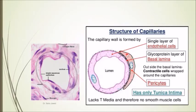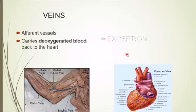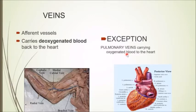In the brain, pericytes are also responsible for the formation of the blood brain barrier. They stabilize the endothelial cells and help in their maturation. Pericytes are visible at larger magnification.